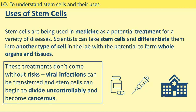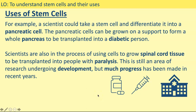We're going to look in more detail at different types of stem cells. An example of a use for this treatment would be that a scientist could take a stem cell and differentiate it into a pancreatic cell. These can be grown on a support to form a whole pancreas and this can then be transplanted into a diabetic person. They are also in the process of trying to grow spinal cord tissue, so that it can be transplanted into people that suffer with paralysis. It's still an area of research and undergoing development, but there has been quite a lot of progress made in recent years.